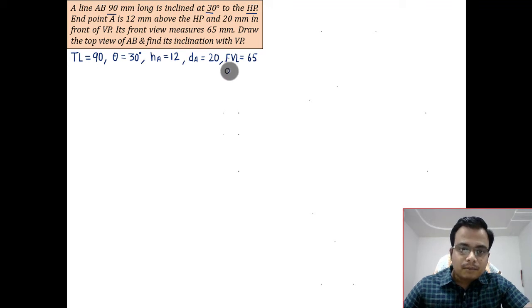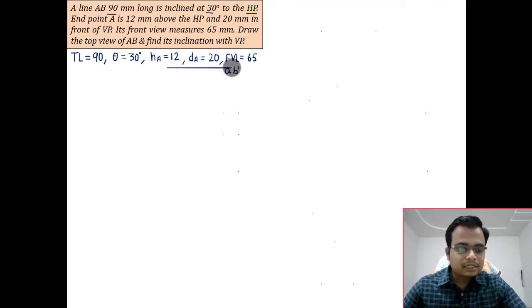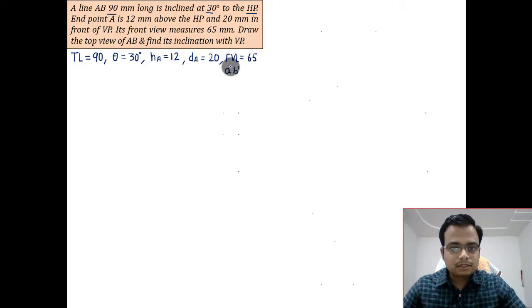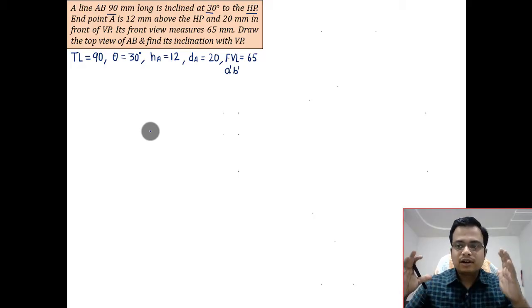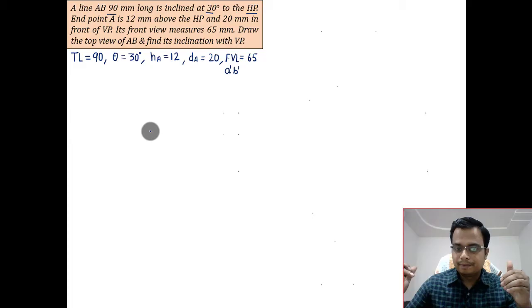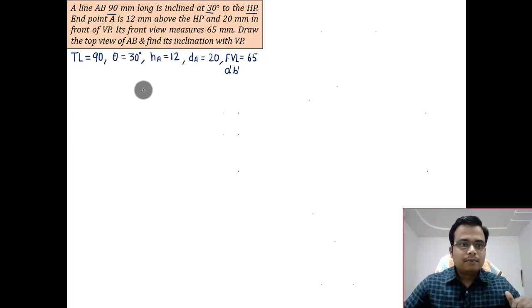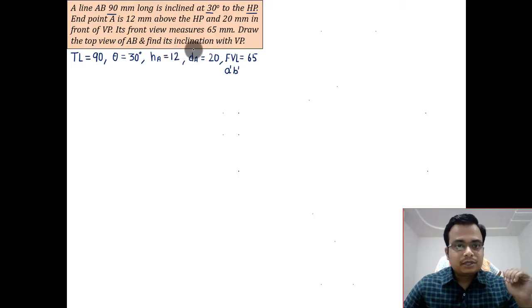This is all we have. Now we've got to make the entire drawing, we've got to make the final front view that is a dash b dash, and the final top view that is ab, and we'll also work out at the end of the video what is the inclination that the line makes with the vertical plane, that is phi has to be calculated.